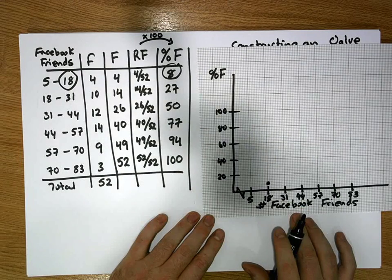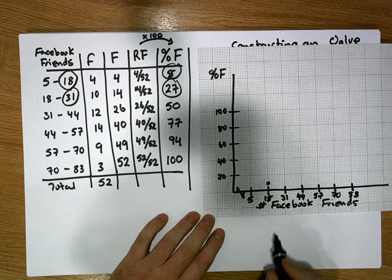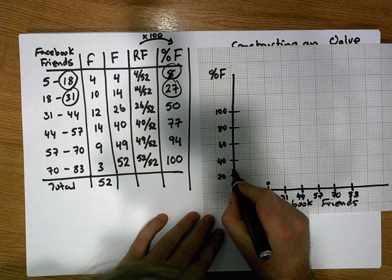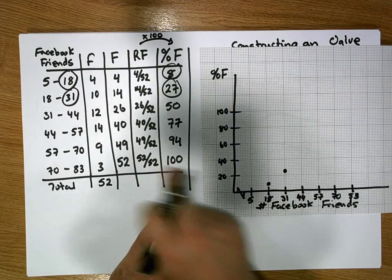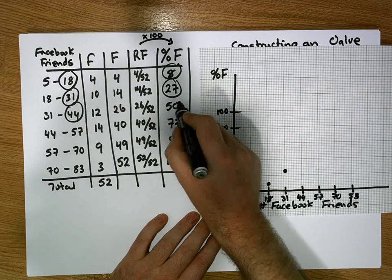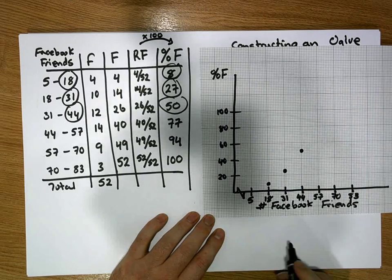At 31, I'm going to go up to 27. So here's 31, and 27 is going to be in around here. At 44, I'm going to go up to 50, so here's 44, and up to 50 is in here.